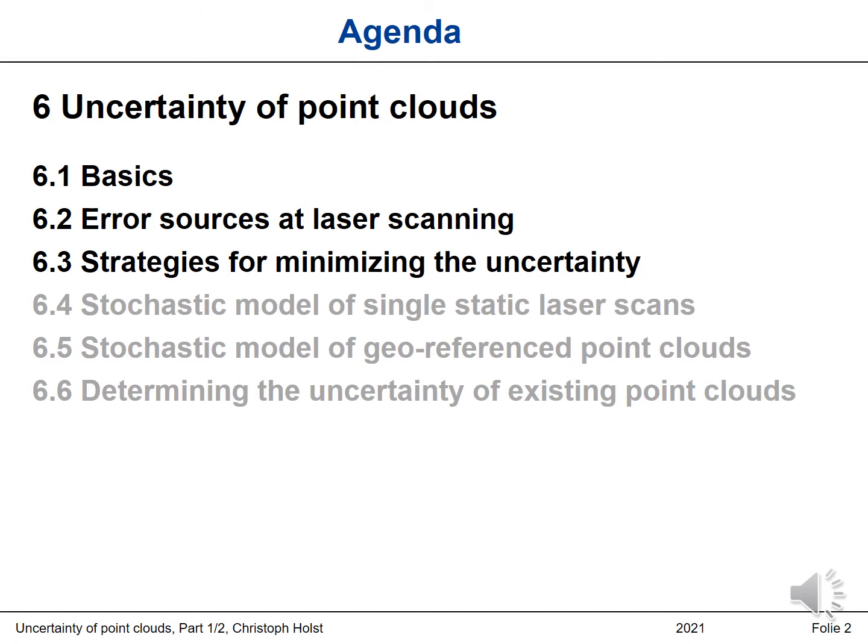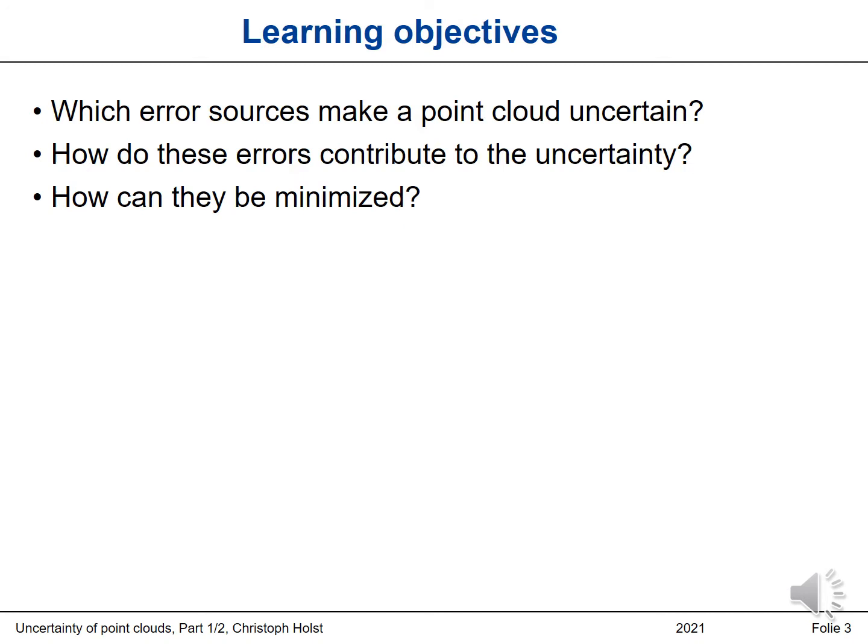Today, we will talk about sections 6.1 until 6.3. Based on today's lecture, I have formulated three learning objectives you should be capable of answering by the end: which error sources make a point cloud uncertain? How do these error sources contribute to the uncertainty? And how can they be minimized?